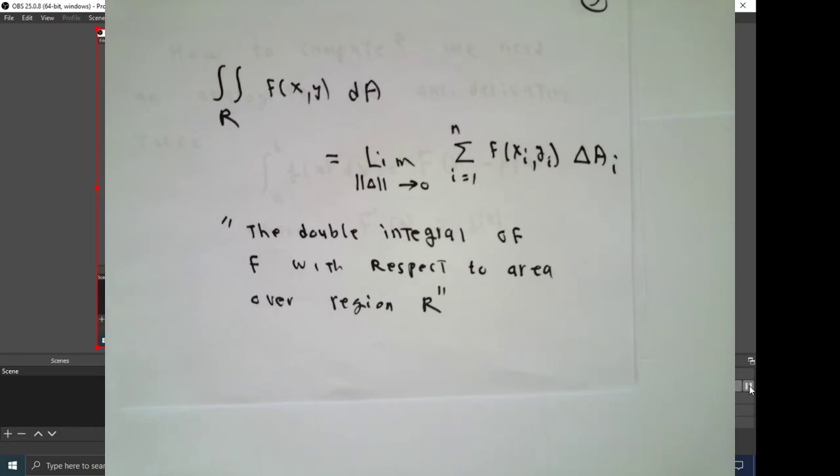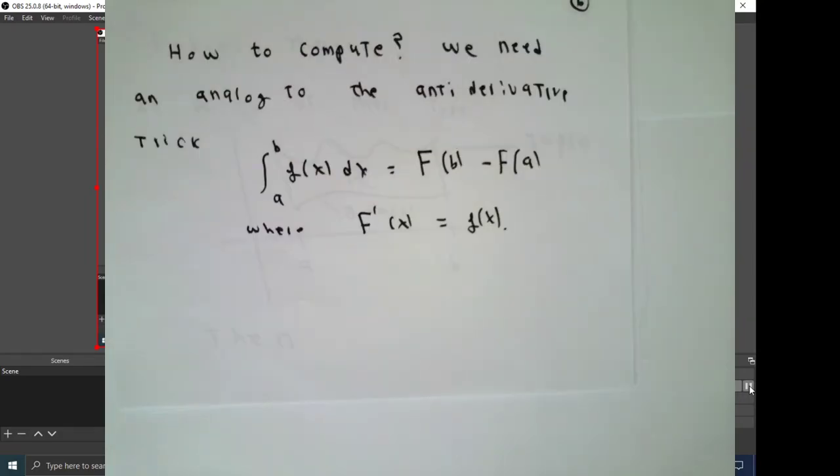At this time, we don't know how to calculate any such thing. What we need is some sort of analog to the fundamental theorem of calculus, also known as the antiderivative trick.